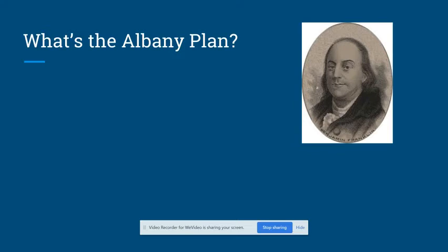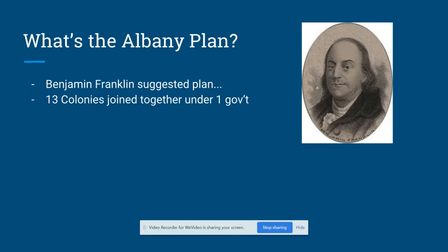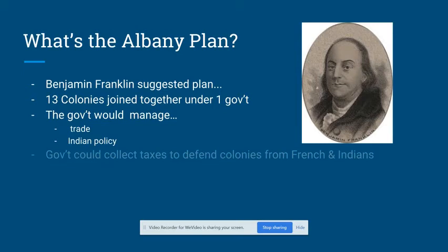Some people at this meeting, like Ben Franklin, proposed the Albany Plan. What was the Albany Plan? The Albany Plan proposed that the 13 colonies join together under one general government. This grand council of elected officials would manage trade, manage Indian policy, and collect a tax for defending the colonies against the French and the Indians.